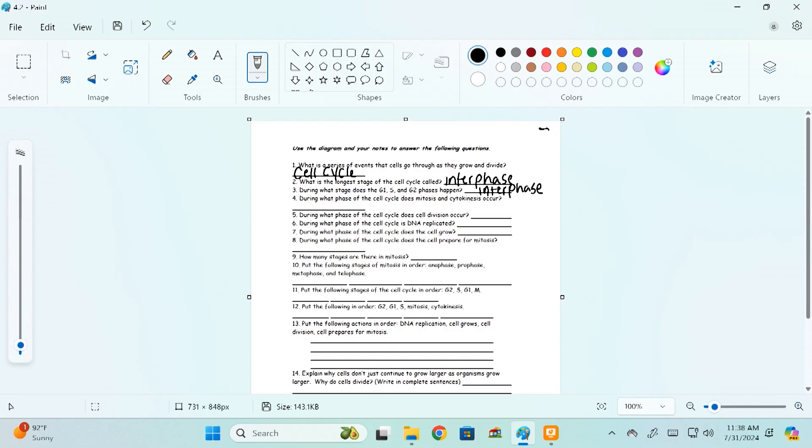All right, let's keep it going. Number four, during what phase of the cell cycle does mitosis and cytokinesis occur? Okay, so sometimes this is referred to as the M phase. This is when the cell is dividing. So let's go with M phase for that one. Great job.